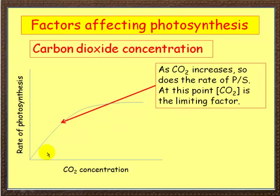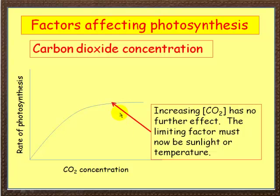At this point on the graph, as photosynthesis increases, it's limited by carbon dioxide until a certain point is reached. From that point onwards, it doesn't matter how much you increase the concentration of carbon dioxide — it has no further effect on the rate of photosynthesis. So now the limiting factor isn't carbon dioxide; it must be light or temperature.